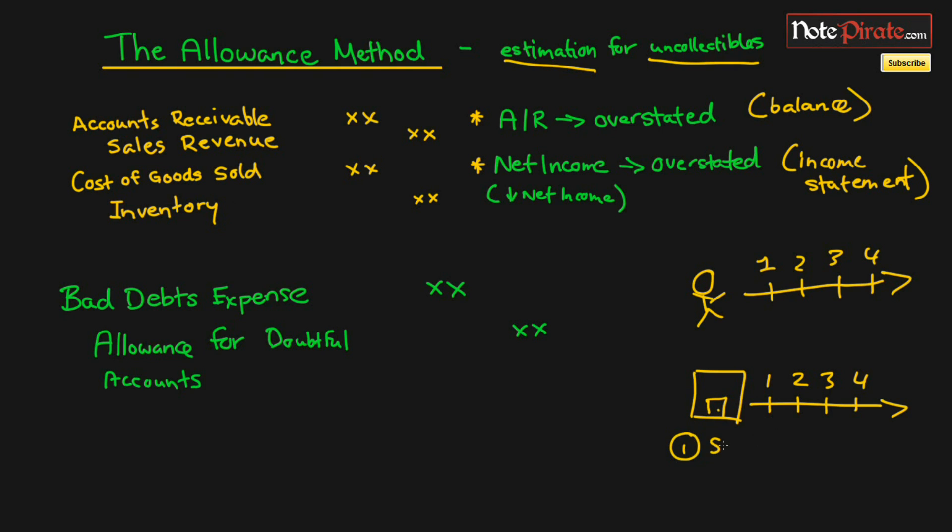They're either going to use one method which is known as the sales method or the second one which is known as the receivables method. We're not going to be talking about that in this video. The bad debts expense is going to match our expense to the revenues that we earn. If you remember the matching principle, we're supposed to match our expenses with all the revenues earned.